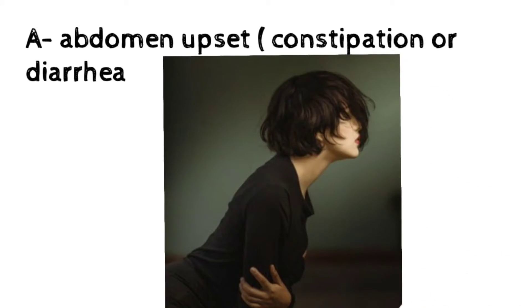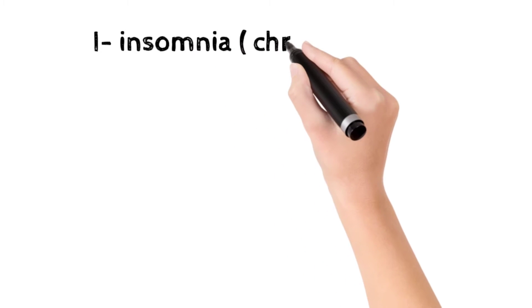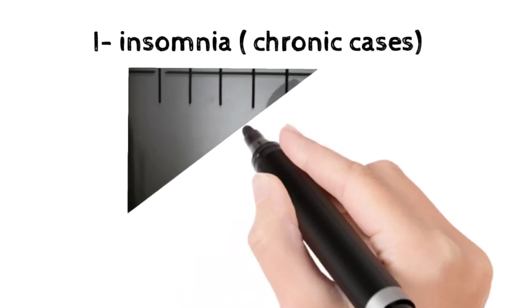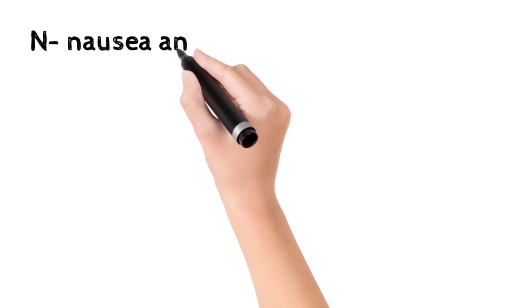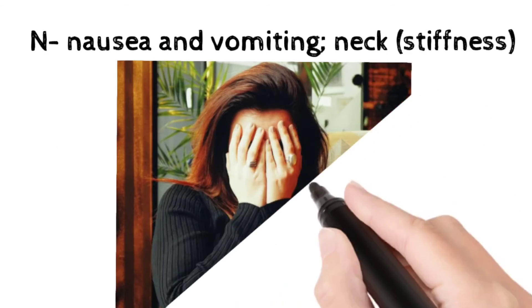There could be constipation or diarrhea. I stands for insomnia which is lack of sleep. It is commonly seen in chronic cases. N stands for nausea and vomiting.